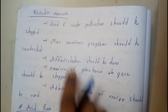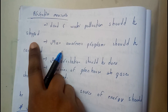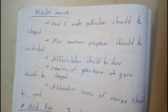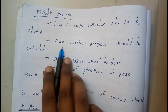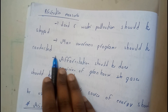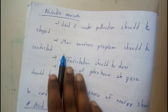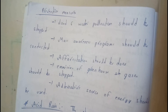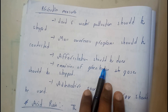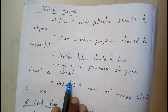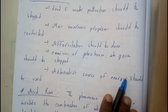Let's go through the preventive measures. Land and water pollution should be stopped, as decreasing pollution will obviously decrease global warming. Mass awareness programs should be conducted to inform the public. We need to do afforestation. Emission of greenhouse gases should be stopped. Alternative sources of energy should be used.